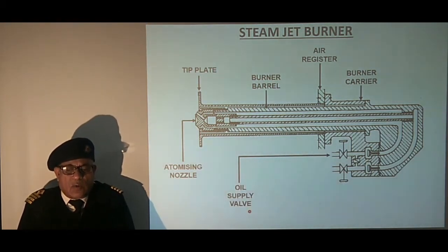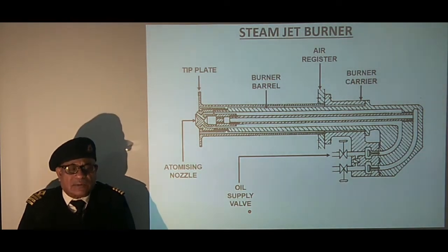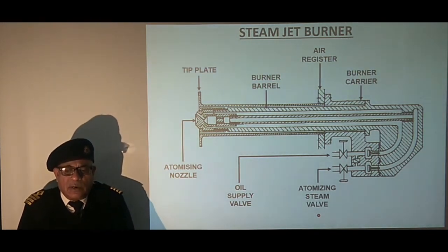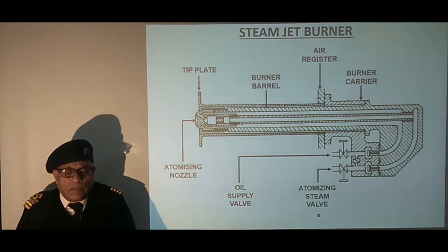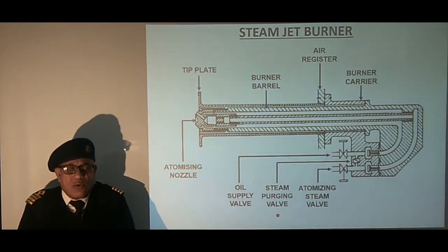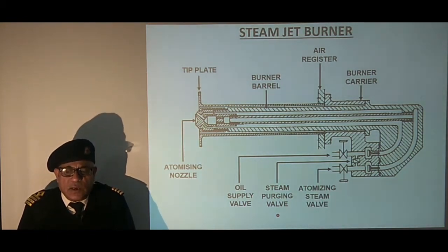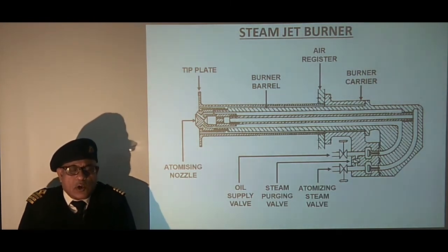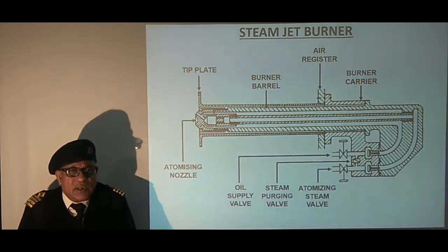Oil is supplied to the outer channel of the barrel through quick shutoff and check valves. Atomizing steam is supplied to the inner channel of the barrel through quick shutoff and check valves. A steam purging valve is provided to drive out remaining oil in the barrel when the burner is stopped. This prevents any tendency of the remaining oil freezing, which becomes highly viscous after cooling down.